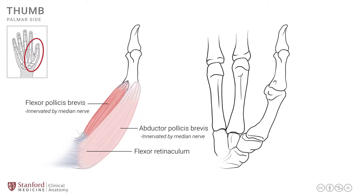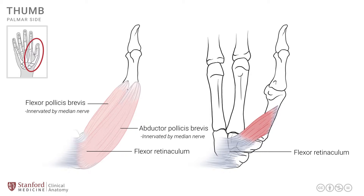If we remove these muscles we are able to see the deeper muscles, shown in the diagram on the right-hand side. With the flexor retinaculum in place and the superficial muscles removed, we can now see the deeper muscle known as opponens pollicis. It attaches from the flexor retinaculum onto the metacarpal, so it does not cross the metacarpophalangeal joint. The opponens pollicis is also innervated by the median nerve.